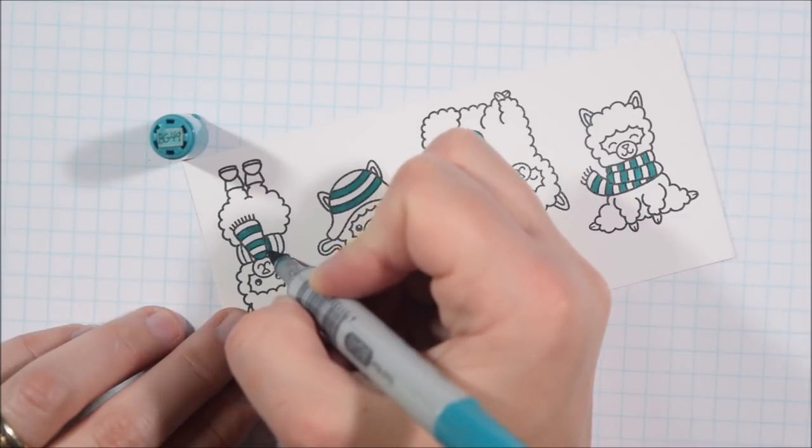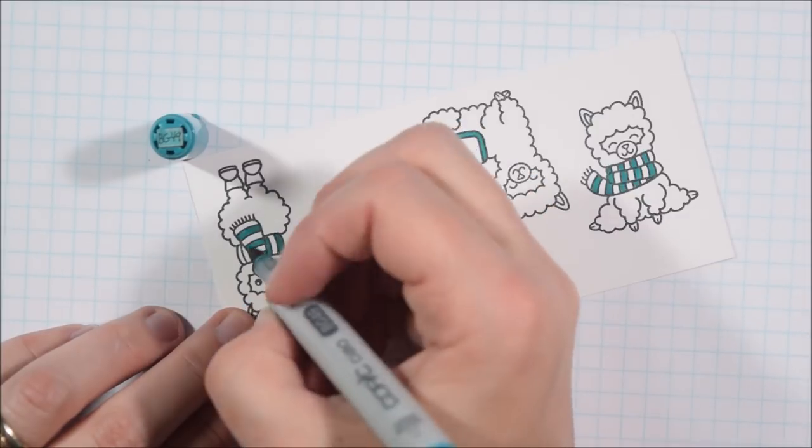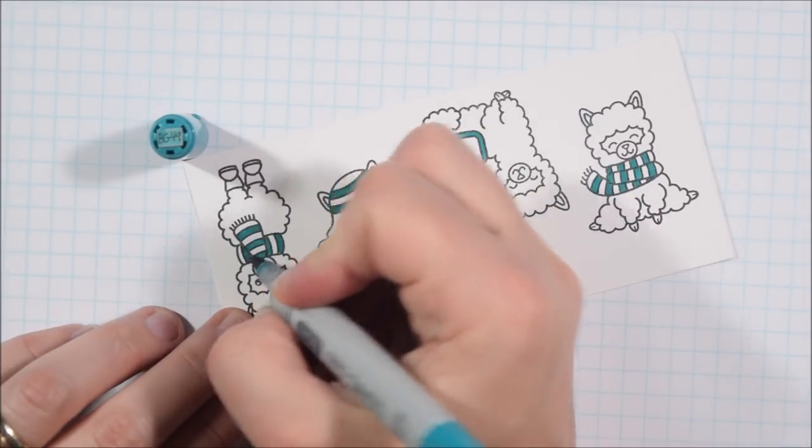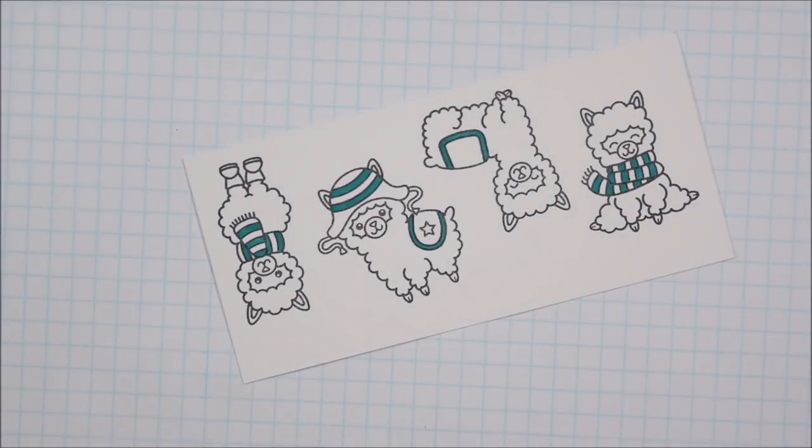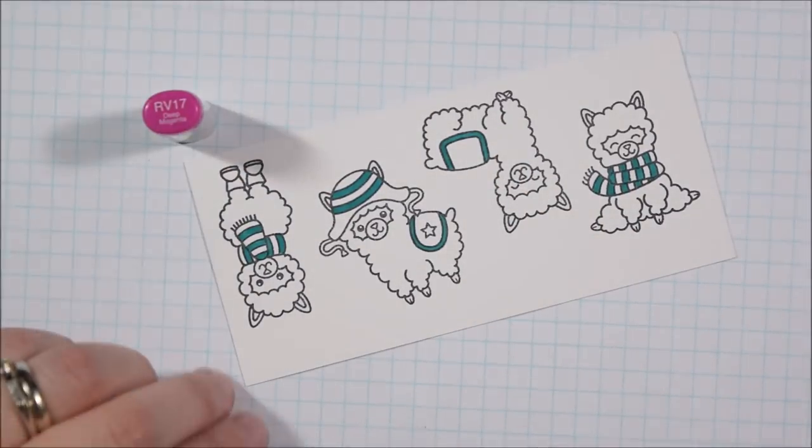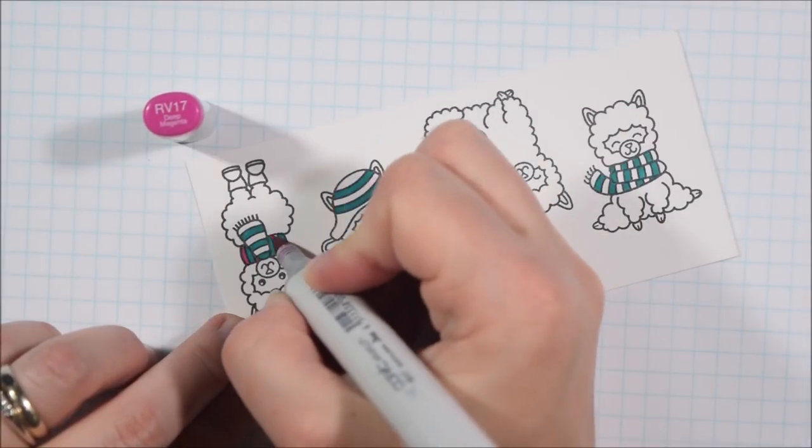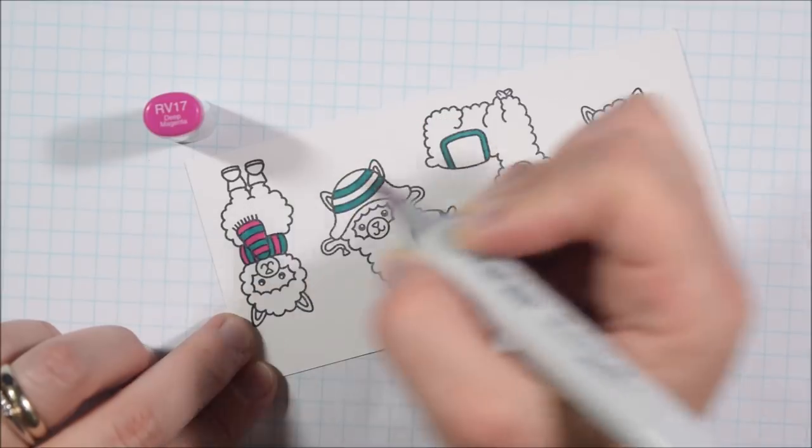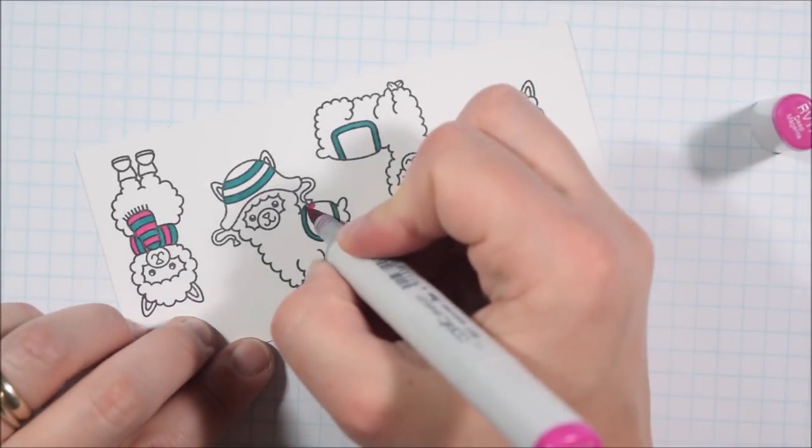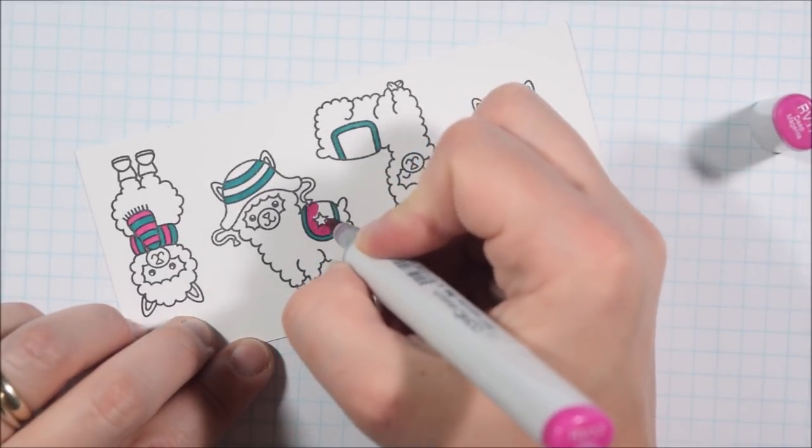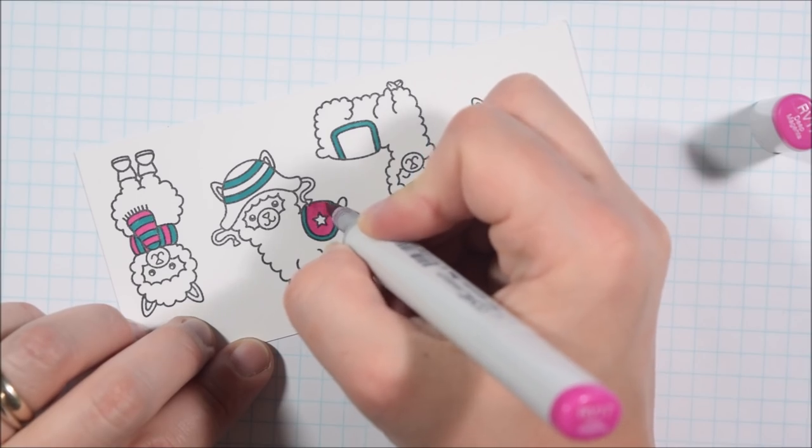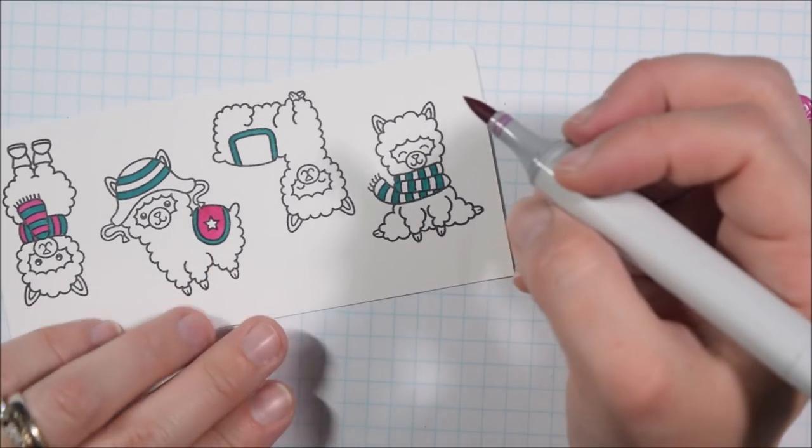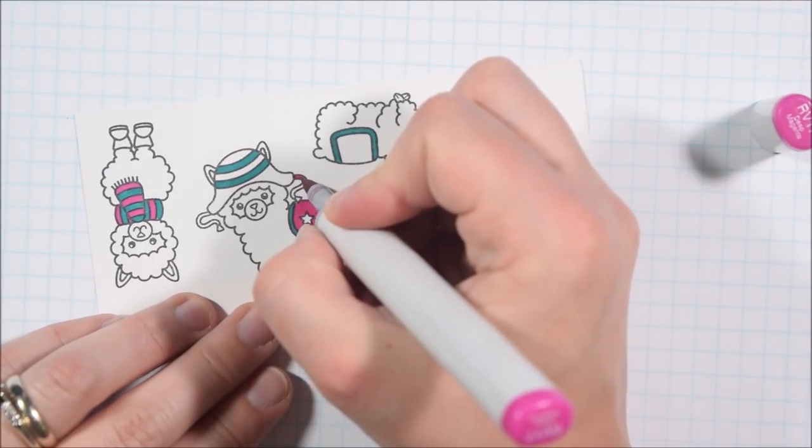I picked a BG49 for my blue and I'm going to go all across the llamas adding a little bit of blue to each llama. Similar thing with the RV17 which is the pink that I picked to coordinate with the Lawn Fawn paper. I'm not going to put it on every single llama because there was two llamas that could only handle two colors and so I didn't want them all to match.